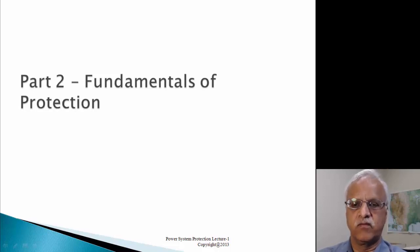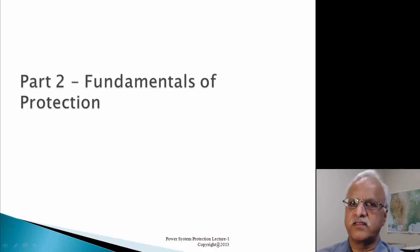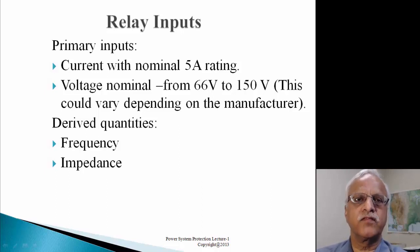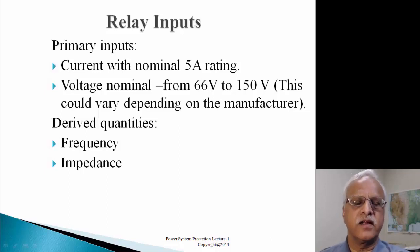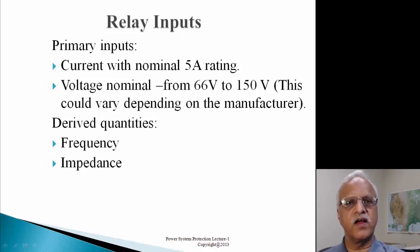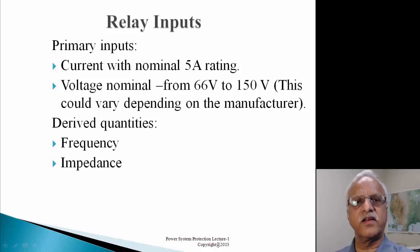Relays monitor the system for healthiness, and if they find any abnormality or short circuit in the system or any equipment, they isolate that particular equipment as soon as possible. The relay inputs we talked about were currents with a nominal rating of 5 amperes. If the primary current is 2000 amperes and we use current transformers, we step down these 2000 amps to 5 amps on the secondary side, connected to the relay as input. Similarly, we have a voltage input where we step down primary voltages to secondary manageable values.